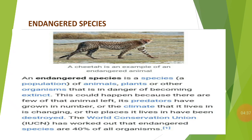Some of the animals listed as endangered are: Asiatic lion, Albatross, Blue Whale, Nilgiri Langur, and Tiger. These are certain species of animals that are listed as endangered, meaning they are at high risk of becoming extinct and are listed in this category. This concludes the topic of endangered species.